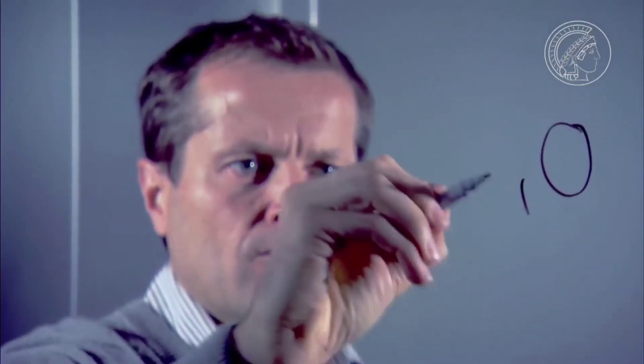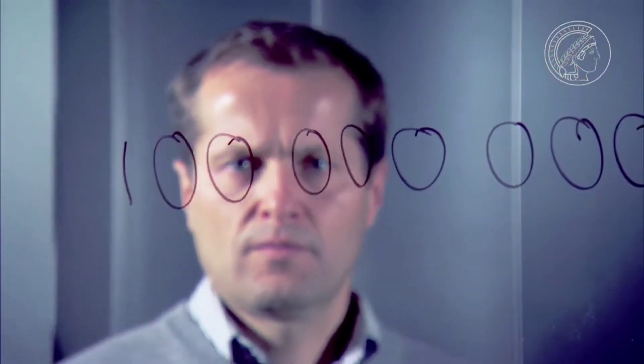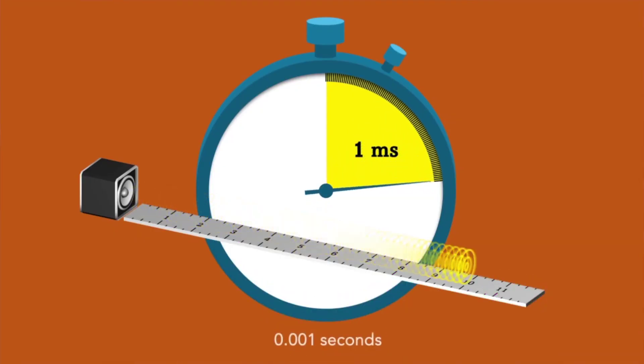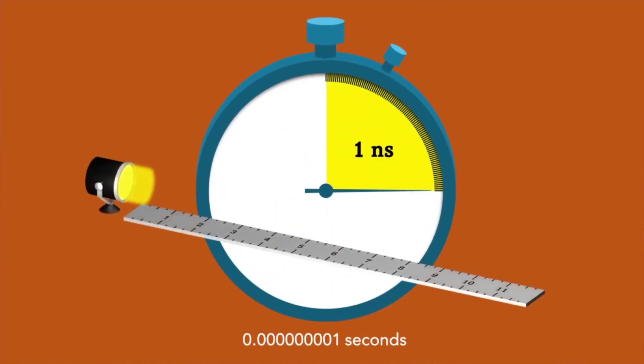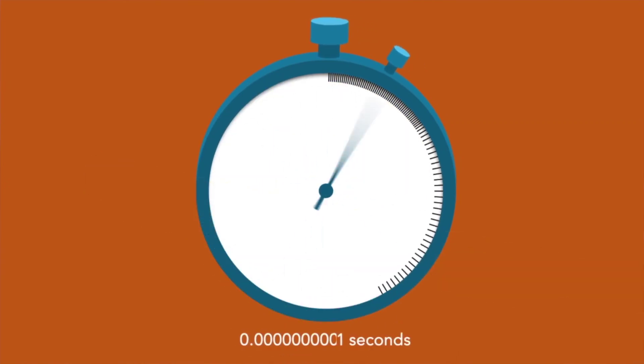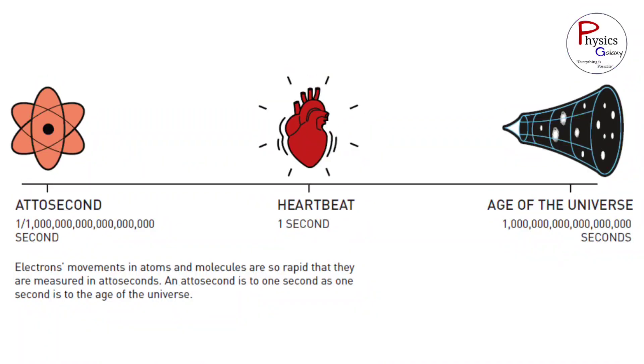An attosecond is a unit of time that is equal to one quadrillionth of a second. This is an incredibly short period of time, and it is the time it takes light to travel across the diameter of an atom. A femtosecond is a unit of time that is equal to one quadrillionth of a second. This is also an incredibly short period of time, but it is longer than an attosecond. The image is trying to show that the age of the universe is incredibly long compared to the age of a heartbeat. It is also trying to show that attosecond pulses of light are incredibly short compared to the time it takes light to travel from one end of a room to the other.